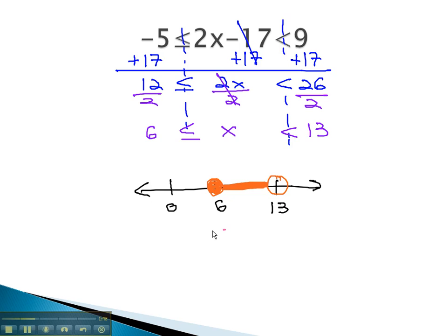In interval notation, a square bracket at the low point, 6, up to 13, which is a curved bracket because it's strictly less than.